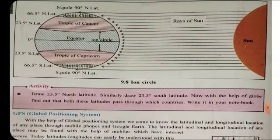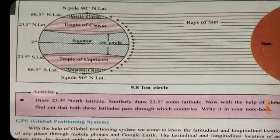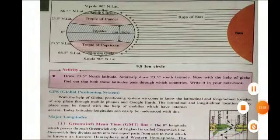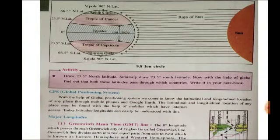We can see from this drawing that whatever countries or places come under the Tropic of Cancer, Tropic of Capricorn, or equator, in that area most of the hot season is found. And whatever countries or places come under the Antarctic Circle or Arctic Circle, in that area most of the cold type of season can be found. Now in this video we will do this much only, and whatever part is left we will see in the next video. Till then stay happy and stay safe. Thank you, bye bye.